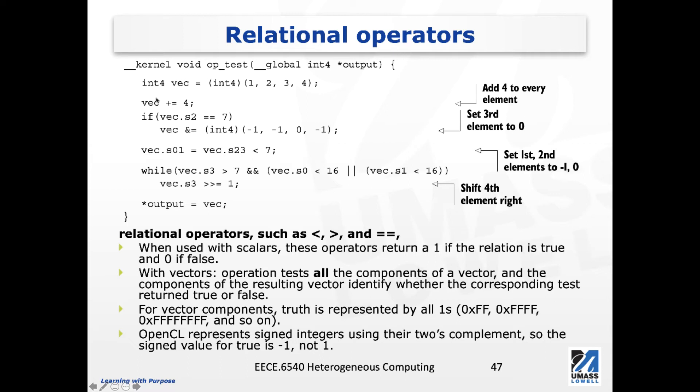The first statement here is vec plus equal 4. This is to add 4 to this vector. Because this is a vector, the addition of 4 applies to every element of this vector. So as a result, this vector will become 5, 6, 7, and 8.